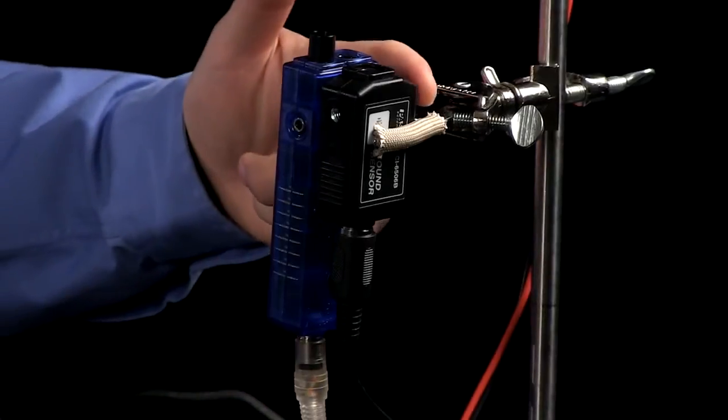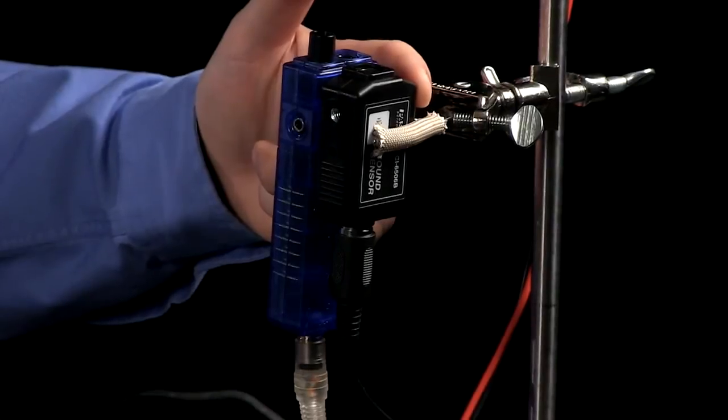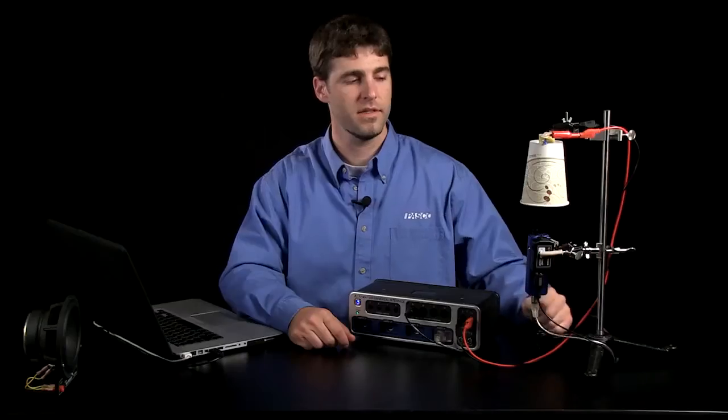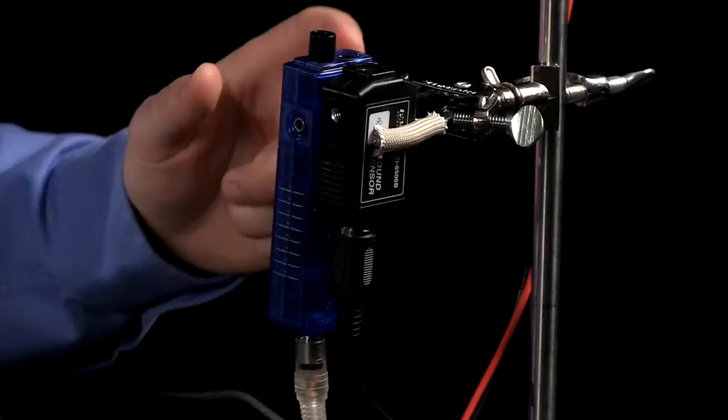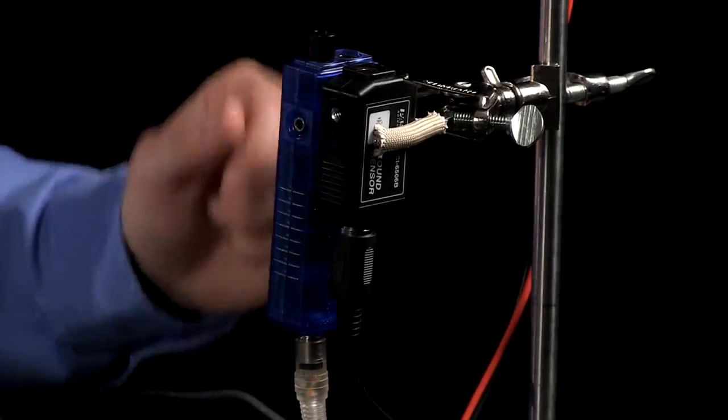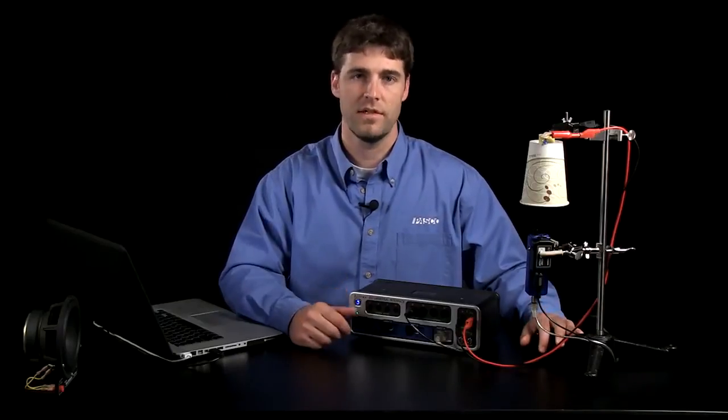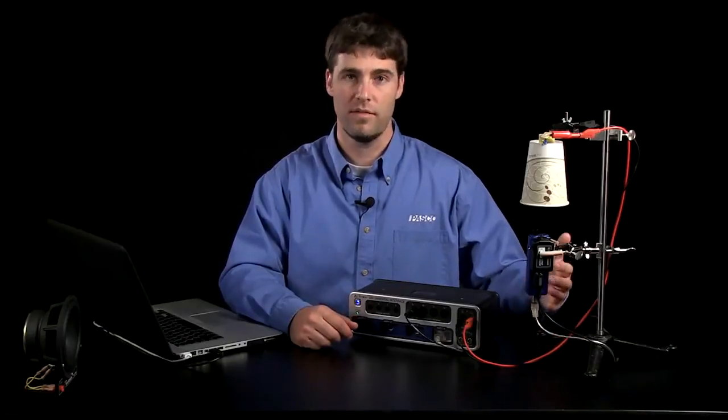To do this, I'll be using two sensors. The first is a black Science Workshop sound sensor. We'll be using that sensor to measure the output frequency from the speaker. The second is a blue Passport temperature, sound level, light sensor. This sensor is going to be used to measure the output sound level from the speaker.